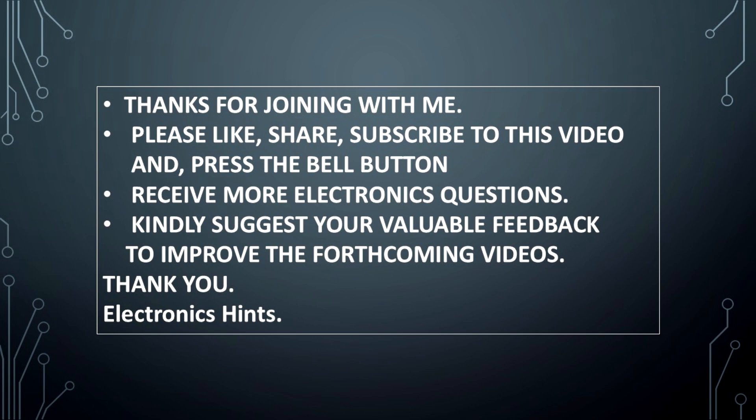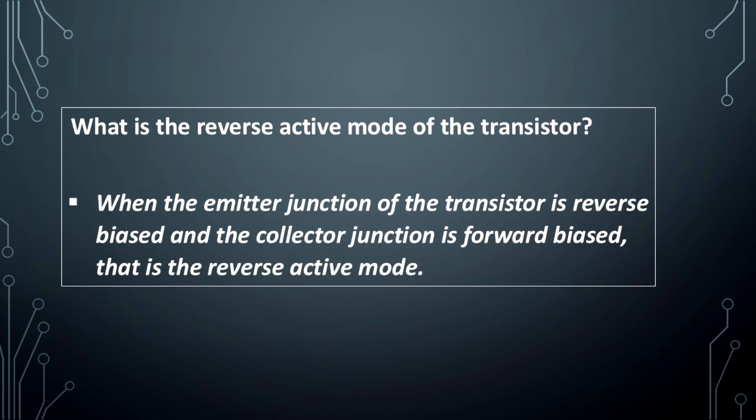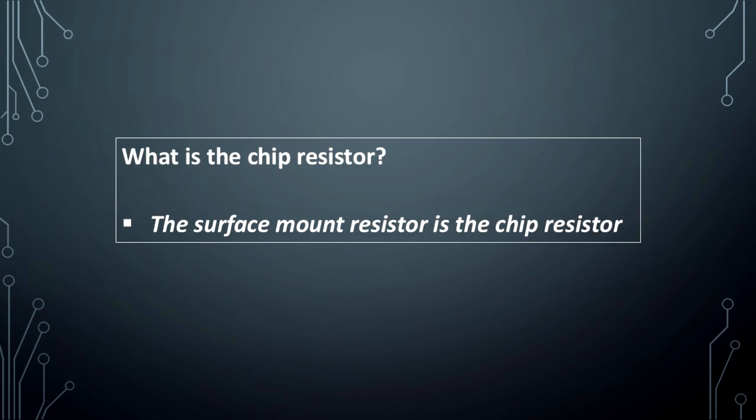What is the reverse active mode of the transistor? When the emitter junction of the transistor is reverse biased and the collector junction is forward biased, that is the reverse active mode.